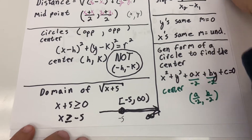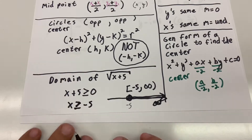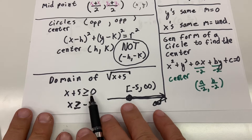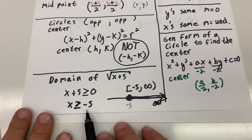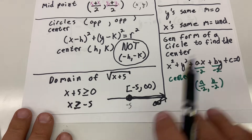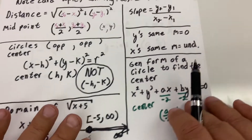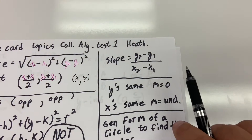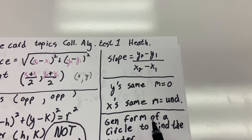If they give you a radical and they want to find the domain, whatever's underneath the radical, you set greater than or equal to zero. Then do a little number line to check. Slope formula is change in y over change in x.